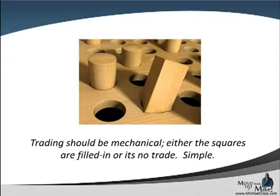Moving on to our discussion about pulling the trigger: yesterday we talked about the fact that if you can't pull the trigger, it has to do with a lack of discipline. Trading should be simple — it should be mechanical, it should be instinctive. Either the squares fit into the square pegs, or they don't. Either the criteria that you have set up for your system is met, or it isn't. Too often our ego gets in the way and we try to jump in or jump out instead of letting our system work for us. High probability trading is about loving the playing field and trading with the momentum, trading with the trend instead of against it. Either your criteria is met or it isn't — there is a trade, or there is not a trade.